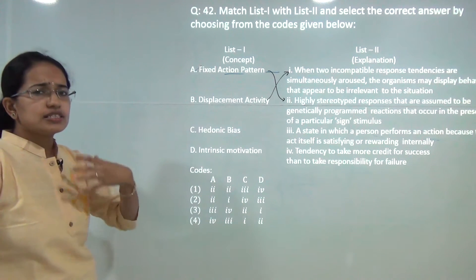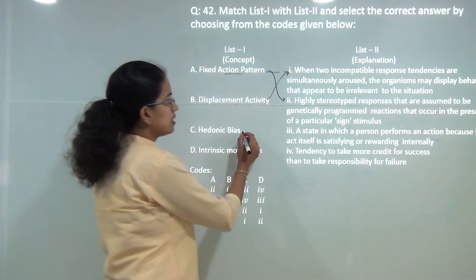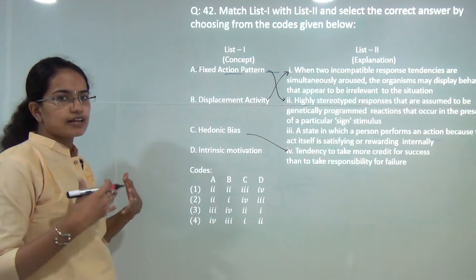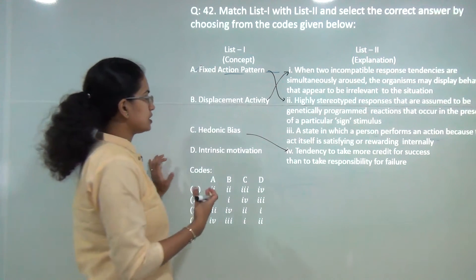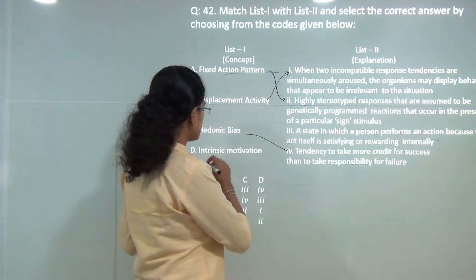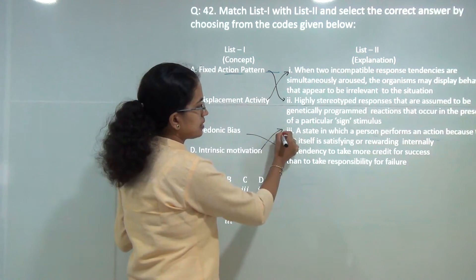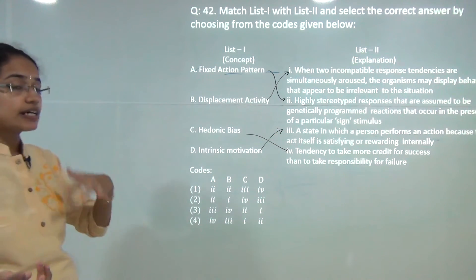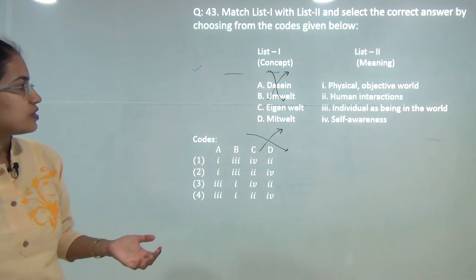Then you have hedonic biasness: that is one's tendency to take more credit for success than to take responsibilities for failure. So if there is anything that succeeds, I would say I have done this. And finally you have intrinsic motivation, which is an individual state which comes from within, and it is internal satisfaction or internal reward that one tries to provide.